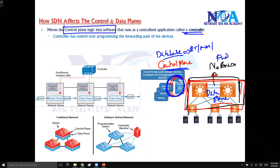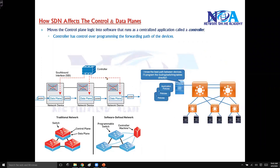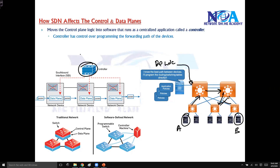They still forward, but the forwarding is done based on instructions being sent by the controller. The controller is going to decide the best route. So let's say there is a packet which is supposed to go from A to B — which path it has to use, the controller will decide the best route, and the controller is going to instruct the devices to use this route.